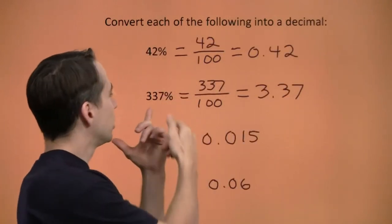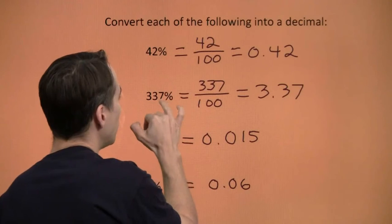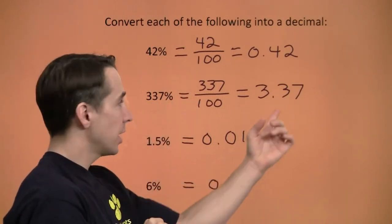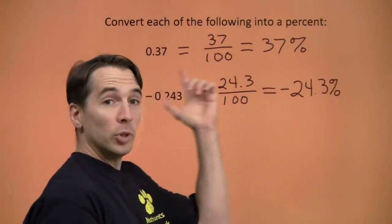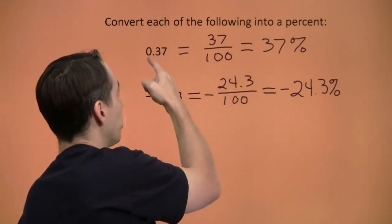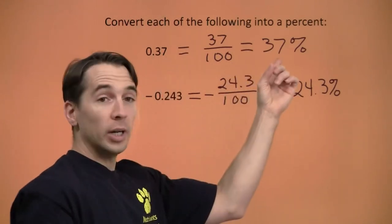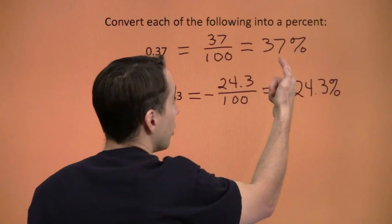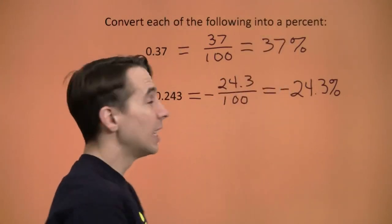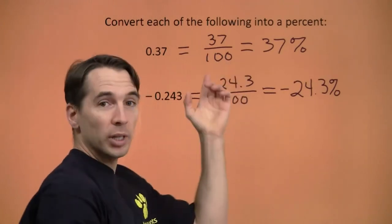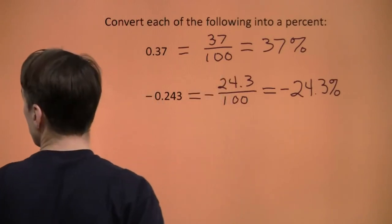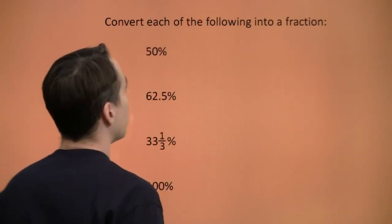To turn a percent into a decimal, all we do is take the decimal point and move it two places to the left. To turn a decimal into a percent, we move the decimal point two places to the right. 0.37 moved two places right gives 37 percent; 37 percent moved two places left gives 0.37. That's because of the middle step — percent means per 100.